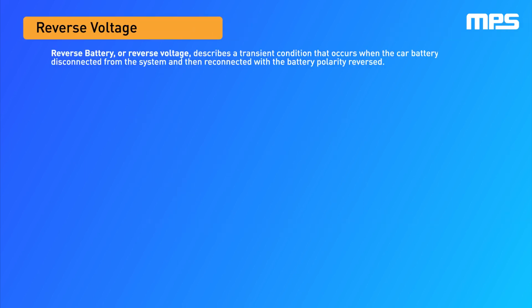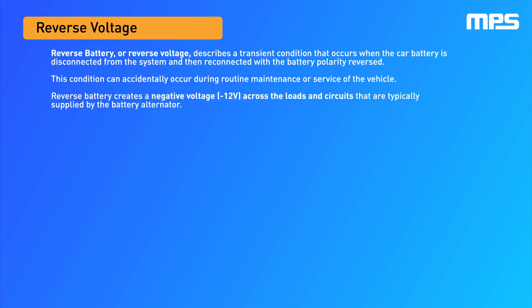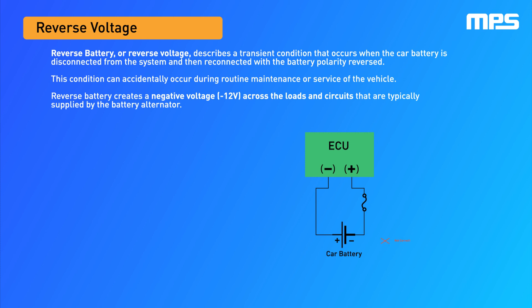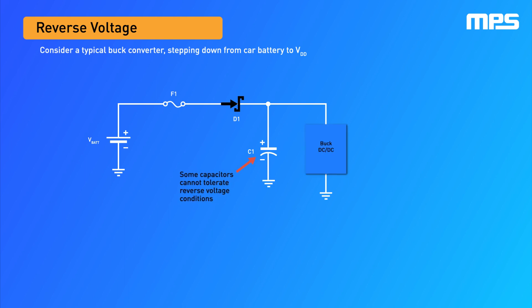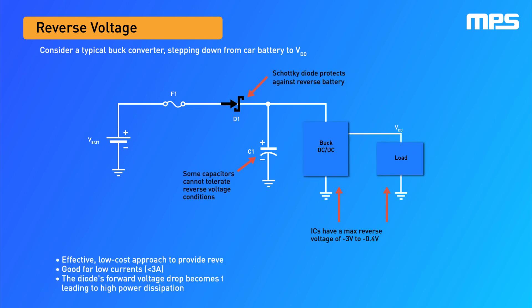A reverse voltage, also called reverse battery, condition occurs when the car battery is disconnected from the system and accidentally reconnected with the battery polarity reversed. This can result in a negative voltage across the input supply connector, which can damage the power supply and other circuits. It is critical to protect all ICs and components from exposure to negative or reverse voltages, as these conditions can severely degrade or damage components. A reverse protection diode or MOSFET is typically used to protect circuits against this condition.